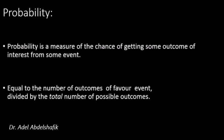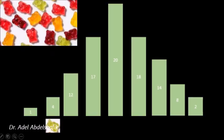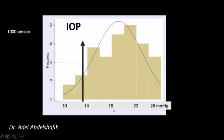So the probability equals the number of outcomes in favor of the event divided by the total number of possible outcomes. Suppose we have different colors of candies and the green ones total four — what is the probability of getting a green one? It is four out of all the total number.